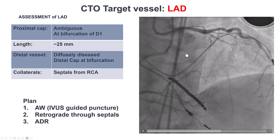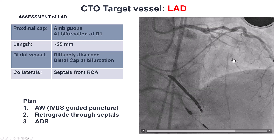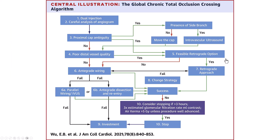The first approach is to try antegrade wiring with IVUS guidance, since we have this diagonal branch next to the proximal cap. The other option is to go retrograde. We left ADR as the last resort because, especially in the LAD, using ADR might result in loss of several branches — both septals as well as the diagonals. Here we have a bifurcation on the proximal cap with the diagonal and a bifurcation on the distal cap with another diagonal, so ADR is the least preferred approach.